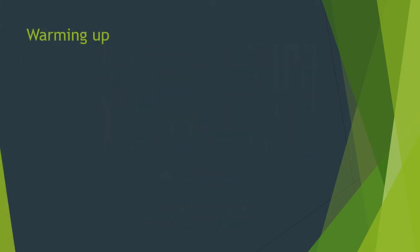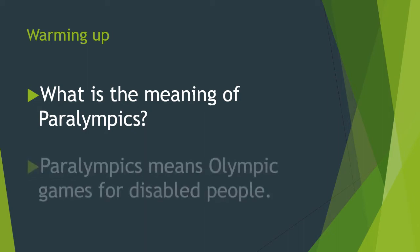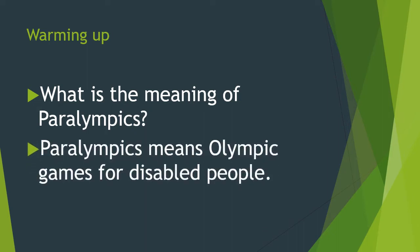Let's start our lesson as a warming up. We have to know what is the meaning of Paralympics. Think for a minute to try to know the meaning of it. Paralympics means the Olympic Games for disabled people.